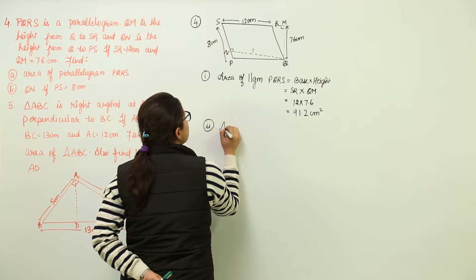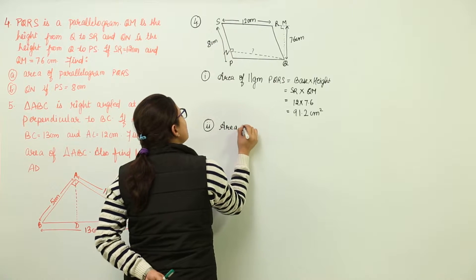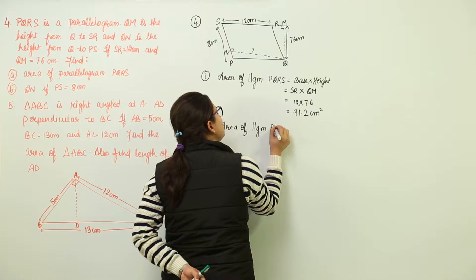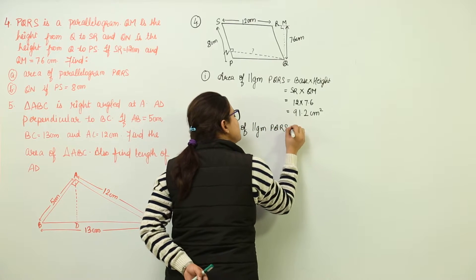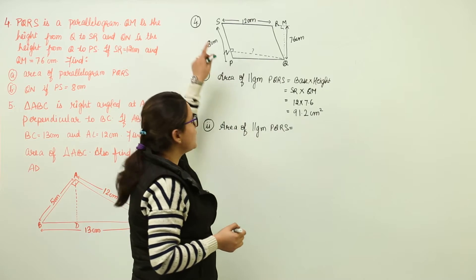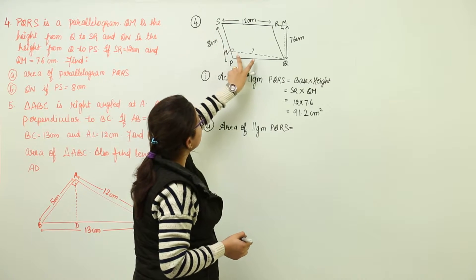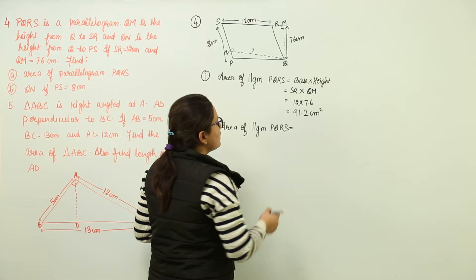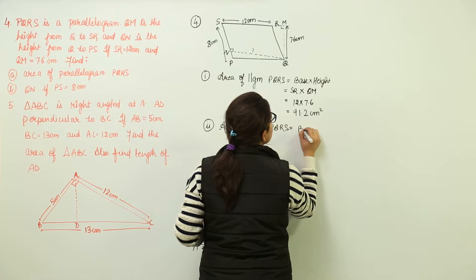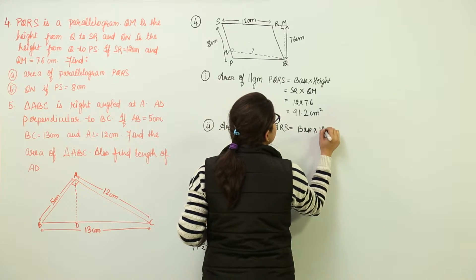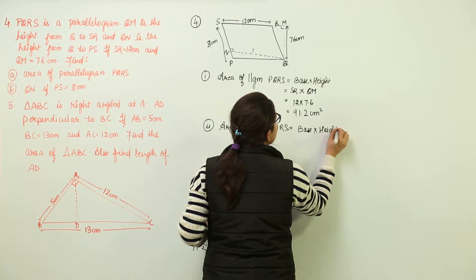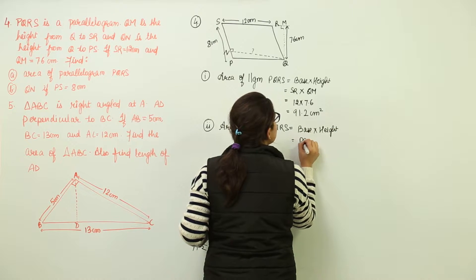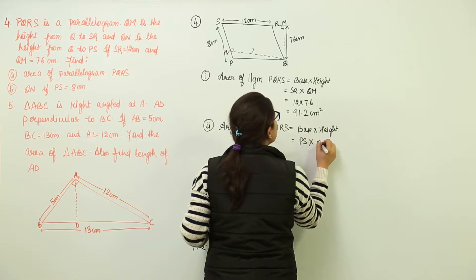So we will write over here that the area of parallelogram PQRS can also be written for the base as PS and height as QN. Now you can write this as base into height only, where base has changed to PS and the respective height would be QN.